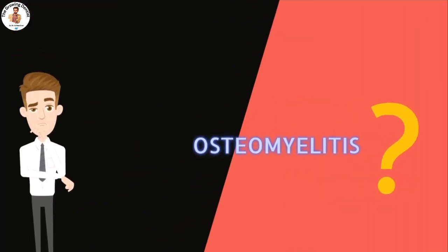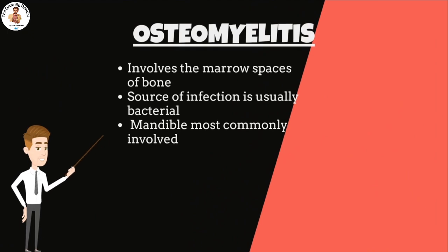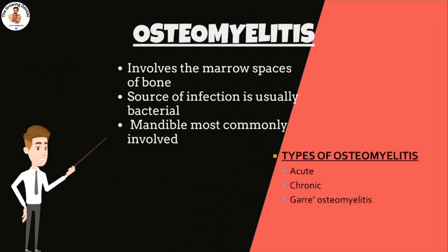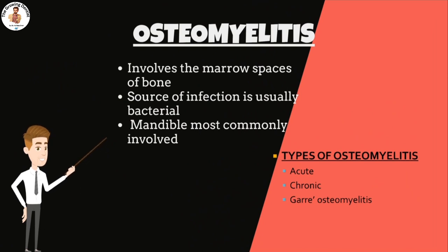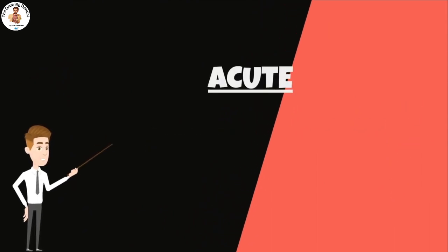Osteomyelitis is an inflammatory process involving the marrow spaces of bone. This also involves the jaw and can be acute or chronic. The inflammation extends away from the initial site of infection, involving the medullary spaces. The source of infection is usually bacterial, and the mandible is most commonly involved. Types of osteomyelitis are acute, chronic, and Garre's osteomyelitis. Acute osteomyelitis is caused by an extension of an untreated periapical abscess.